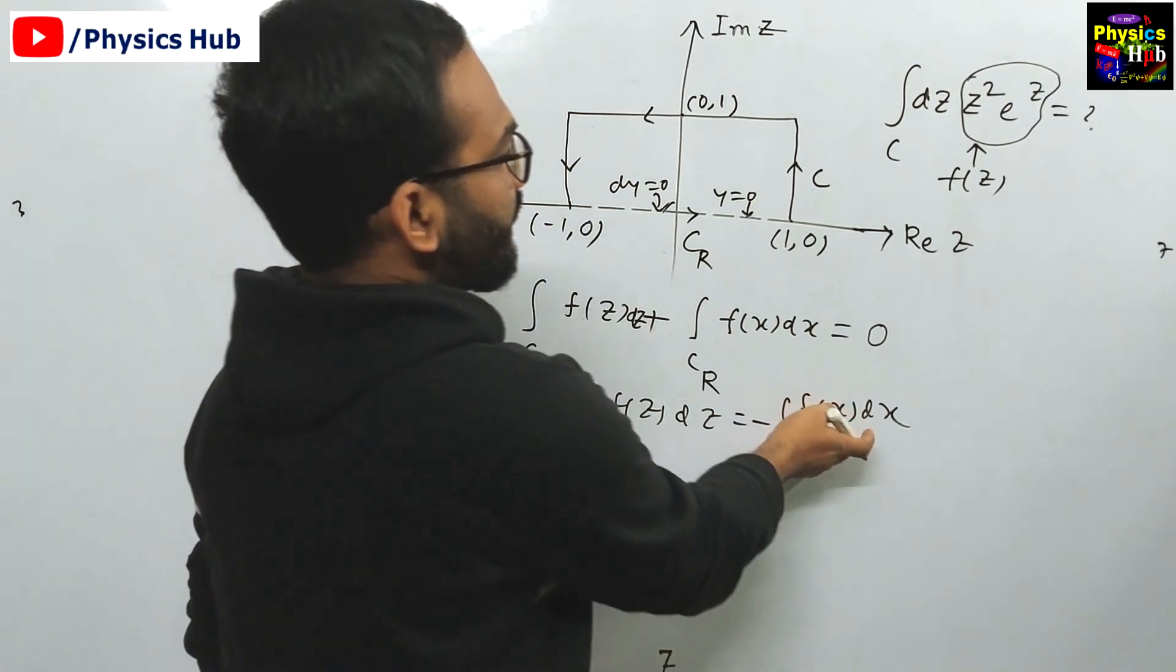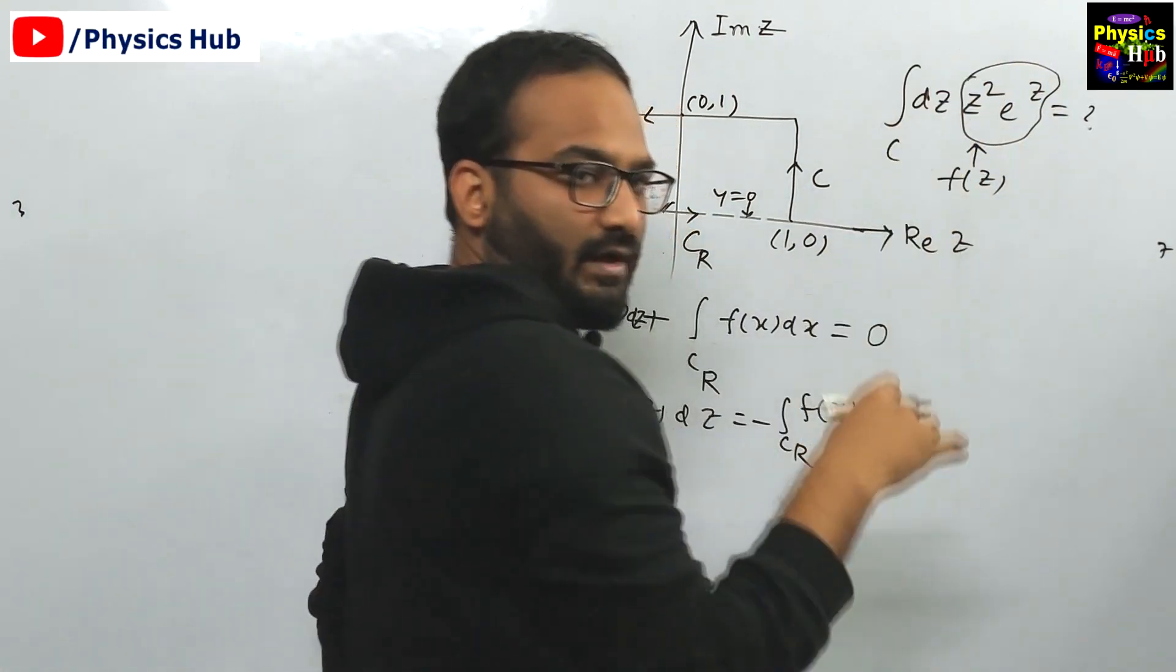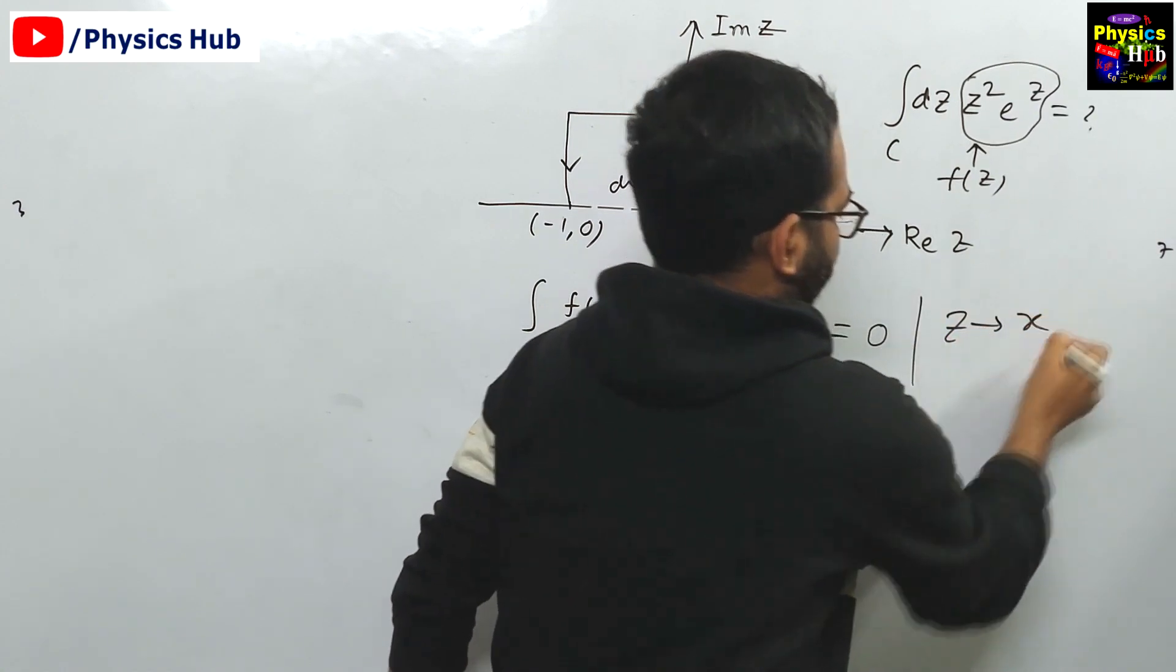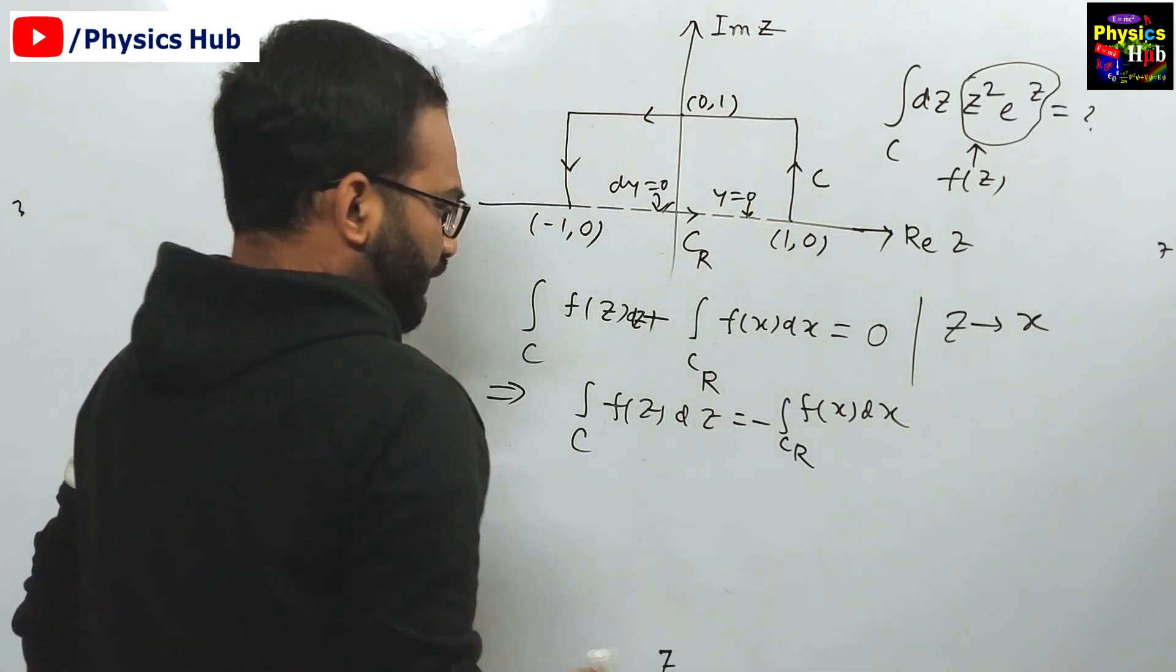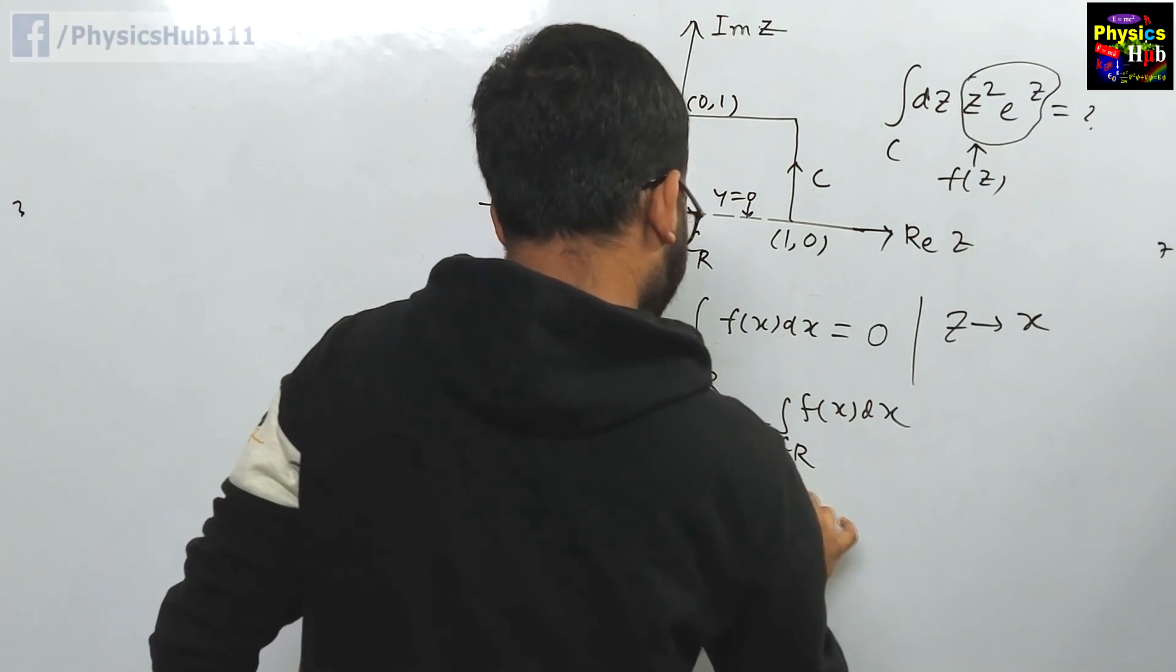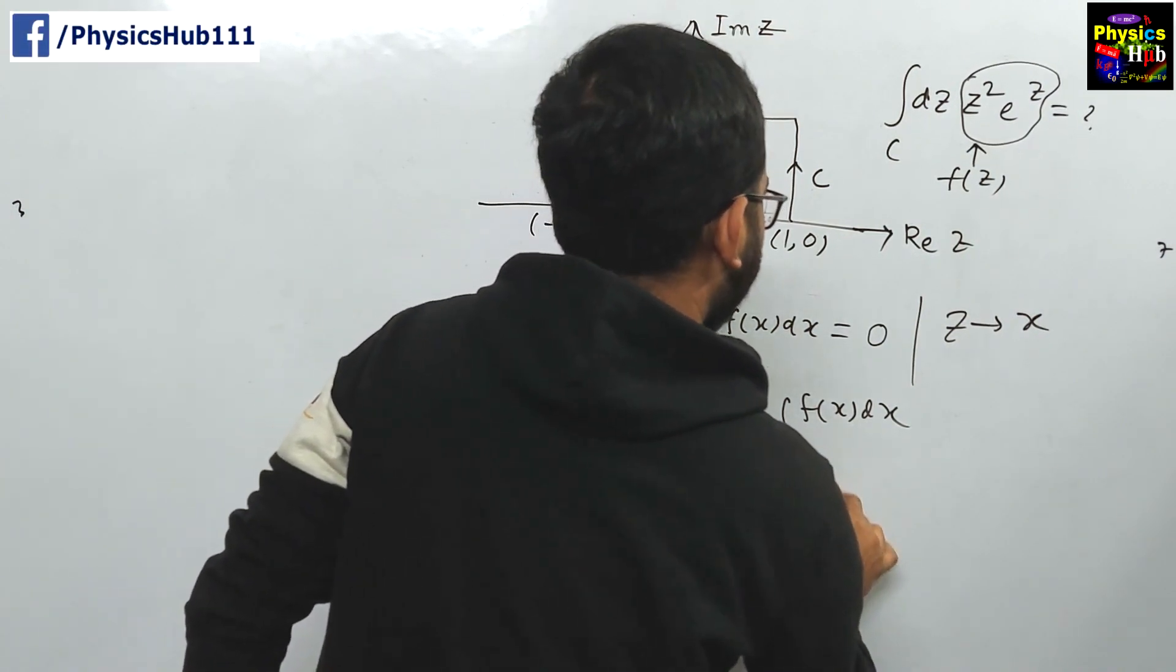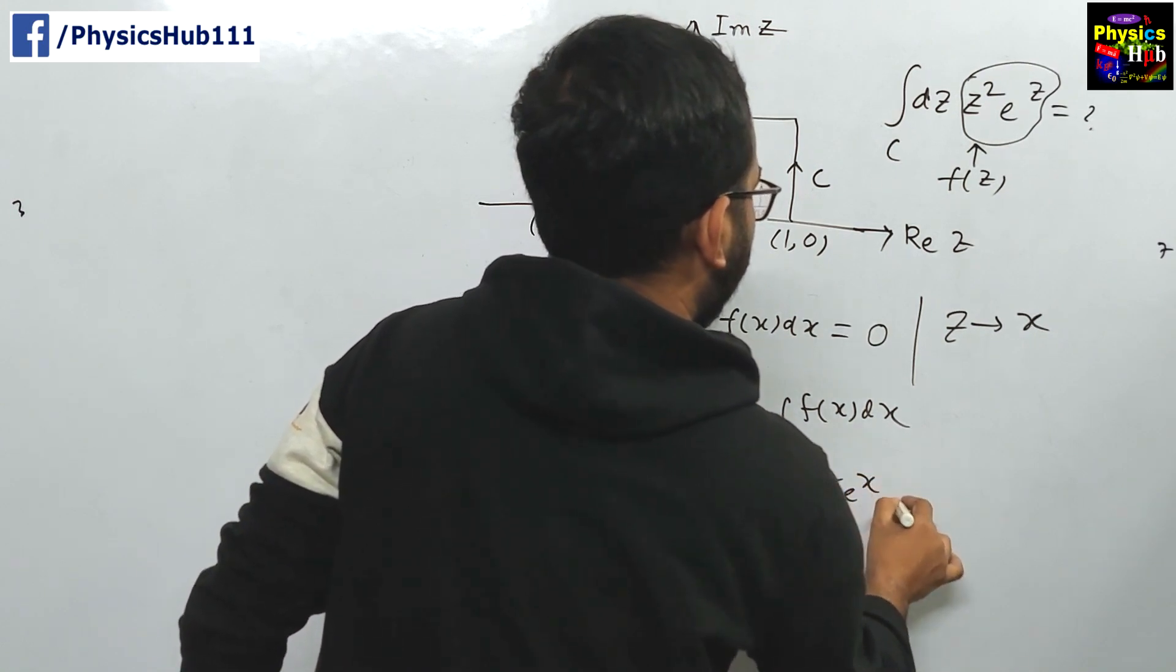You can see contour over C, f of z dz, this will be equals to minus Cr f of x dx. Here what will be f of x? f of x is nothing but x² e^x, z is replaced by x because y is 0.